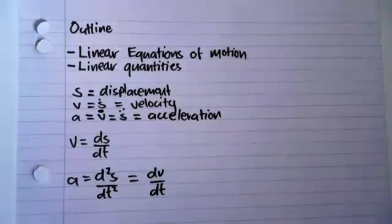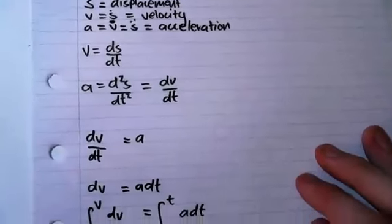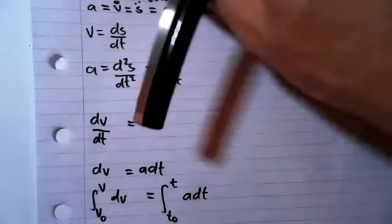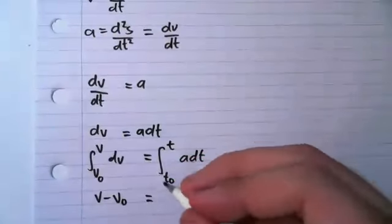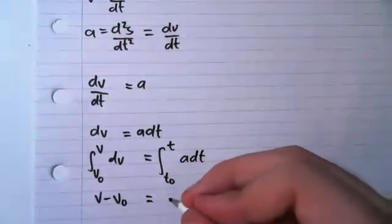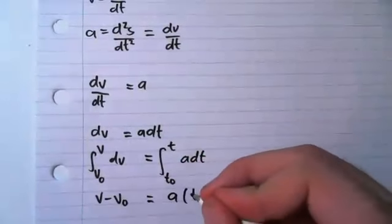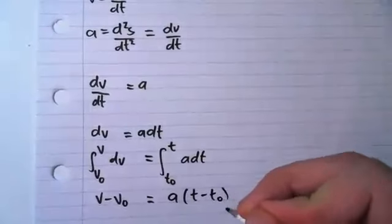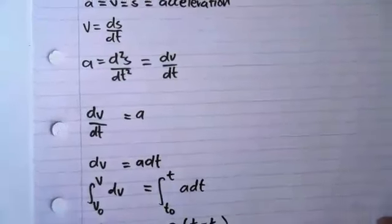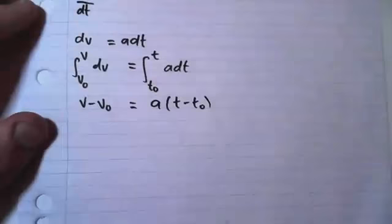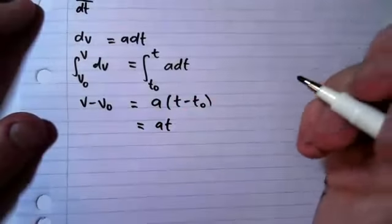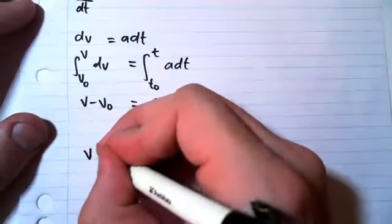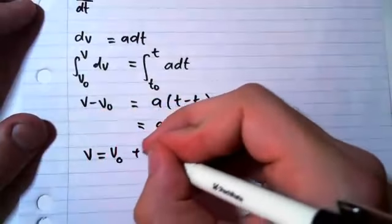We end up getting V minus V naught is equal to A times T minus T naught. Now when T naught is naught, or if we assume that T naught is naught, this simply becomes AT. So that our first equation of motion is V equals V naught plus AT.